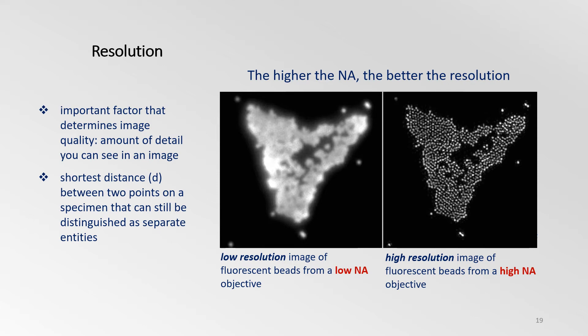The numerical aperture of an objective is directly related to resolution. Imaging with a high NA objective leads to better quality and better resolution images. With resolution comes better detail, which makes it easier to identify small objects in your specimen and distinguish them from other small objects.